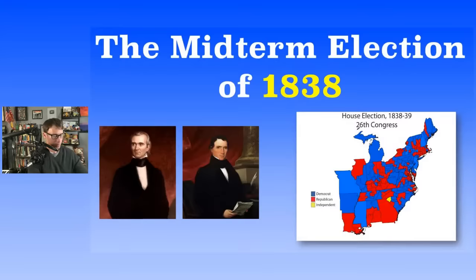In 1840, Martin Van Buren loses re-election. The Whigs gain power in the presidency for the first time ever! Then William Henry Harrison dies, and John Tyler takes over — everybody hates him.